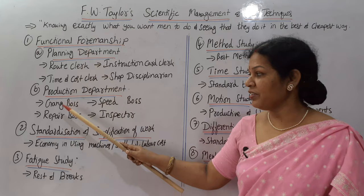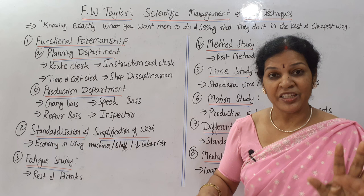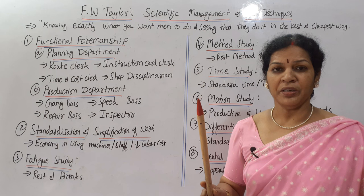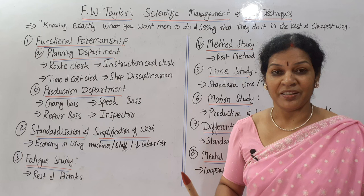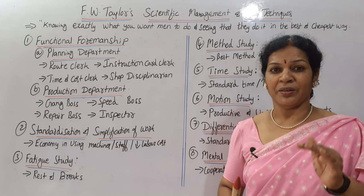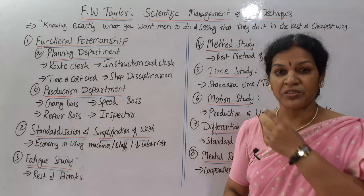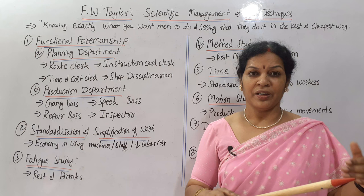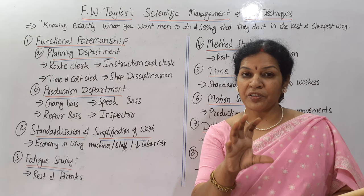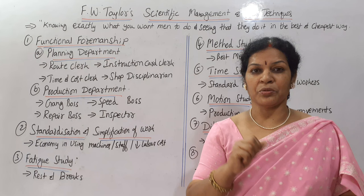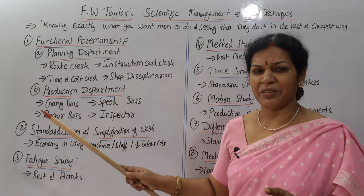These are the four foremen under the planning department. Next, under the production department, four foremen are there. These four foremen are going to take care of production only — how the production is going to be completed properly, effectively, without any delay, achieving optimum production with less expenditure. For that purpose, four foremen are appointed. The first is the gang boss — he takes care of production functions, any problems arising, whether machines are working or not, any stoppage. All production problems are handled by the gang boss.